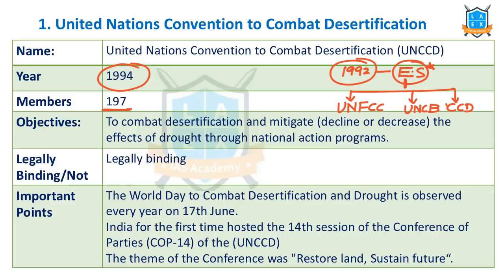The objective of this convention is to combat desertification and mitigate the effects of drought and desertification through various local, national and international measures. This is a legally binding convention. Due to global warming and climate change, the process of desertification is increasing — not just in India, but worldwide. We want to reverse that trend. Every year, June 17th is observed as World Day to Combat Desertification and Drought.